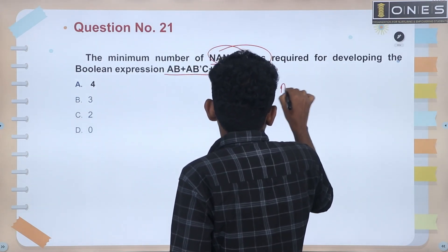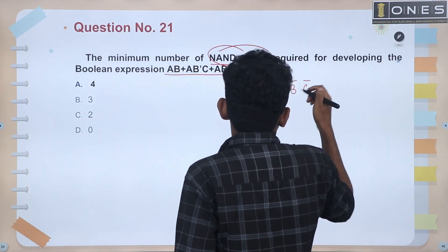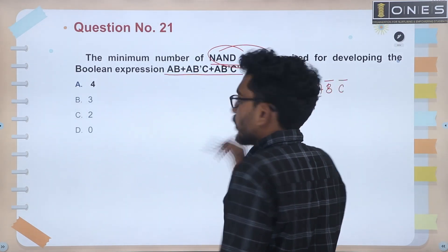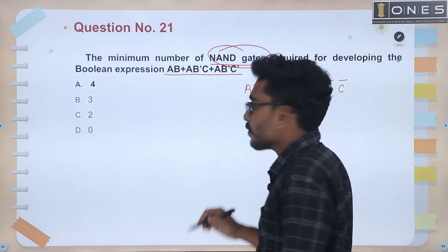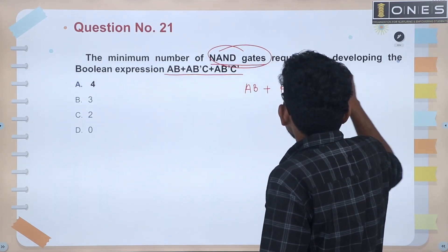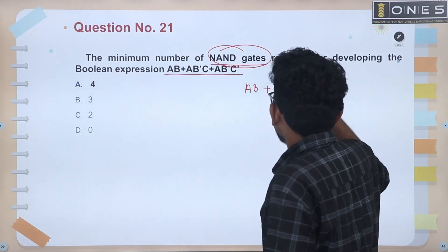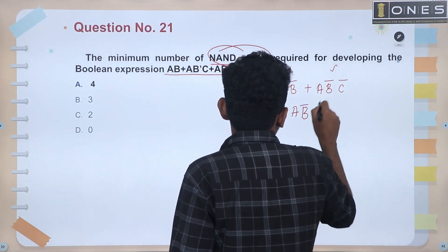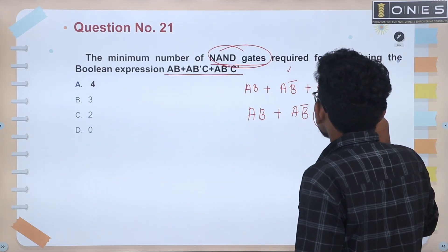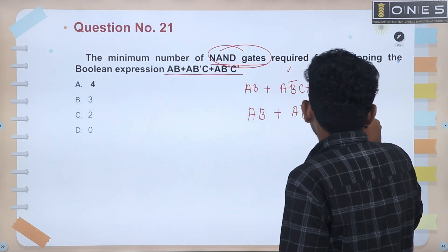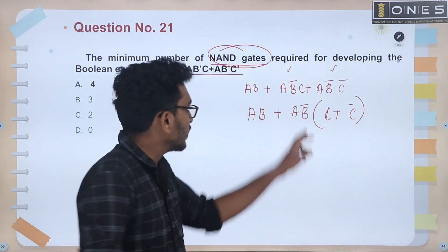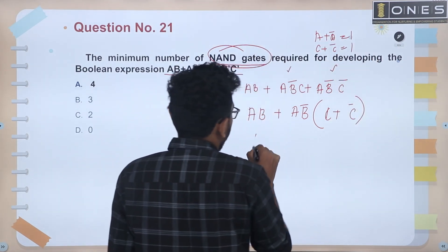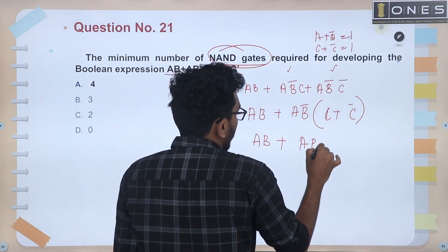Simplifying: AB plus AB̄C plus AB̄C̄. Taking AB̄ as common from the second and third terms: AB̄C plus AB̄C̄ gives AB̄(C + C̄) = AB̄. So the expression simplifies to AB plus AB̄. Then taking A as common: A(B + B̄) = A.